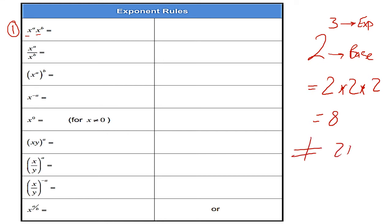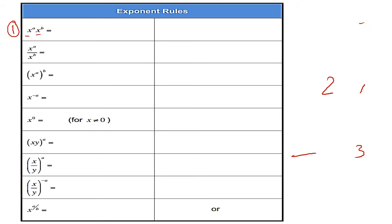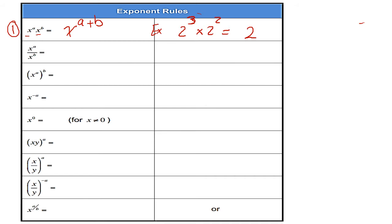Note that 2 to the power of 3 is not equal to 2 multiplied by 3, because 2 multiplied by 3 is simple multiplication giving 6, but 2 to the power of 3 is repeated multiplication giving 8. So going back to Rule 1: if I am multiplying two numbers having the same base, I add the exponents. So X to the power of a times X to the power of b equals X to the power of a plus b. For example, 2 to the power of 3 multiplied by 2 to the power of 2 equals 2 to the power of 5.